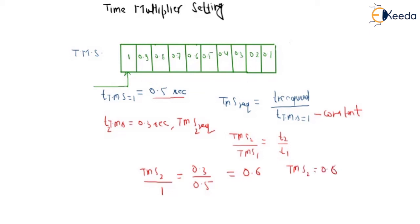If we want to operate our relay at 0.3 seconds, then we should have set this to 0.6. Means we have to change this time multiplier setting to 0.6, so it will operate in 0.3 seconds. So this is how we will have the idea of time multiplier setting.